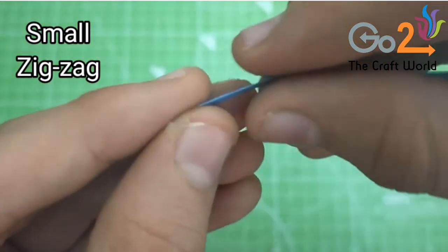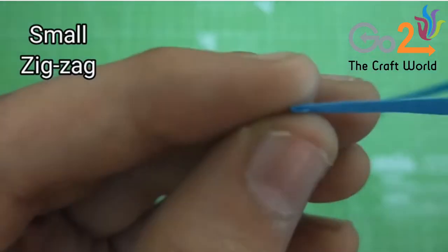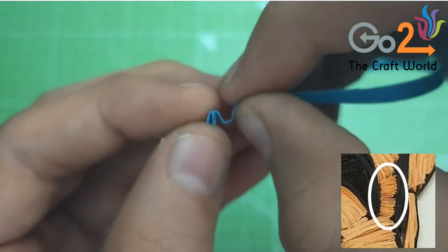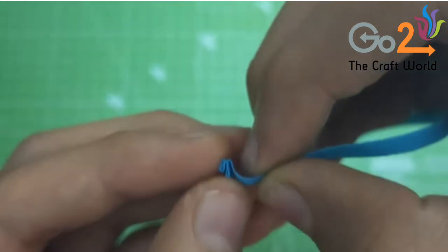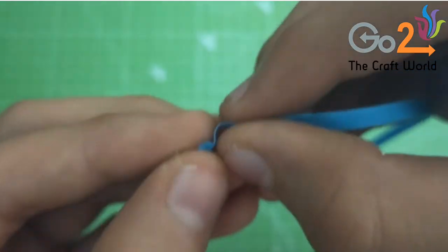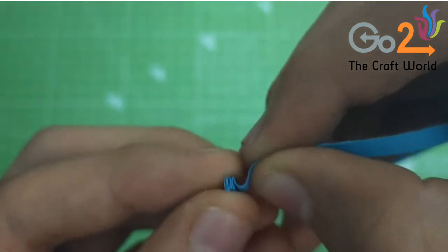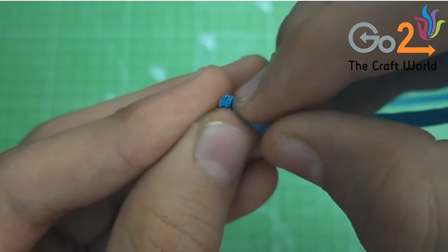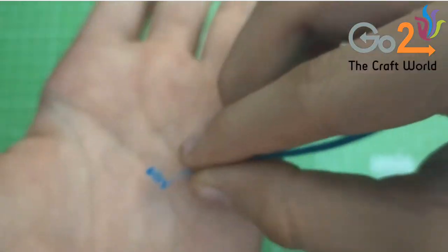Now small zigzag. It is mostly used in small parts of the portrait like this one. You have to fold very small as shown. It will be a little bit difficult when you will do it for the very first time, but this zigzag is very useful for your portraits.